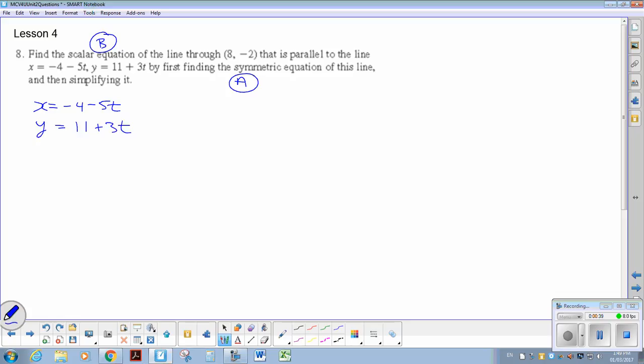So going to symmetric form, it would look like this, x plus 4 over negative 5. So you're just rearranging and solving for t. Each of these fractions is equal to t, so y minus 11 over 3.